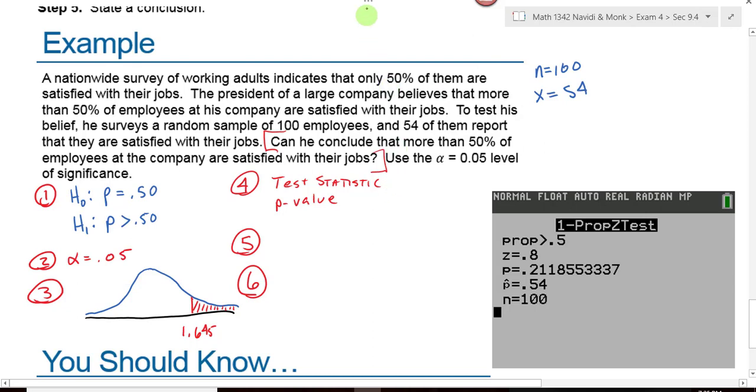What is our test statistic going to be? Z equals 0.8. And our p-value, 0.2119. 0.8 is over here. Do we reject or fail to reject the null hypothesis? It's in the clear, and our p-value is huge. This number right here was the p-value, and this was our test statistic. This is p-hat, the sample proportion. Since we failed to reject the null hypothesis, can he conclude that more than 50% of the employees at his company are satisfied with their jobs? No, he cannot.